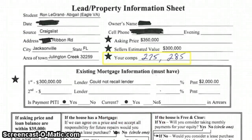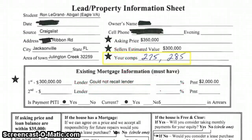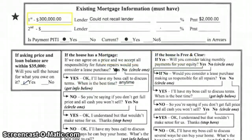From those comps, we've determined that the real market value of this property is about $280,000. Similar properties have sold in the same neighborhood recently for about the same price, so we've got an ARV — after-repaired value — of $280,000. Now if you look in the middle, you'll see that the loan balance, according to the seller, is $300,000, and the payment is about $2,000.